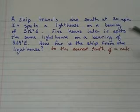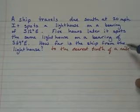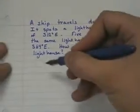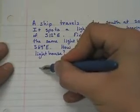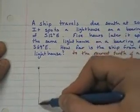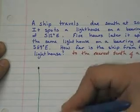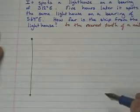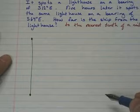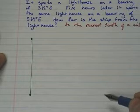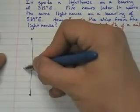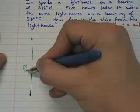What we're asking is how far is the ship from the lighthouse the second time it spots the lighthouse. So the first trick here is to draw a picture. I'm going to have a ship and it's going to travel south. Here's my ship and it travels south, 20 miles per hour for five hours. So 20 times 5 is 100. So it travels a total distance of 100 miles.